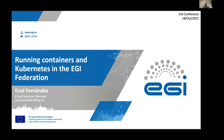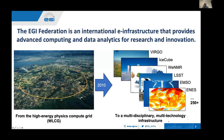I'll talk about how we run containers in the EGI federation. Starting with what EGI is — we started back around 2010, and a bit earlier there was a lot of movement around high energy physics collaborations, the WLCG, which is about setting up an international infrastructure for supporting experiments at CERN.